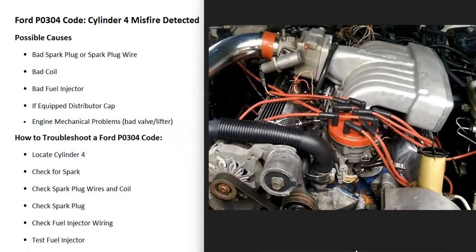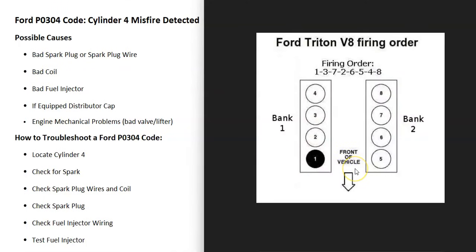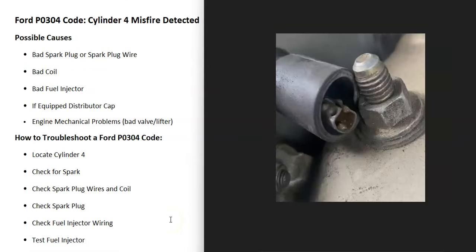How do you go about troubleshooting a Ford with the P0304 code? The first thing to do is locate cylinder number four, since that's the one having the issues. If you Google your engine and look at the images, they usually pop up and tell you which cylinder is number four. Once you locate the cylinder, there are a few different ways to go about troubleshooting this.